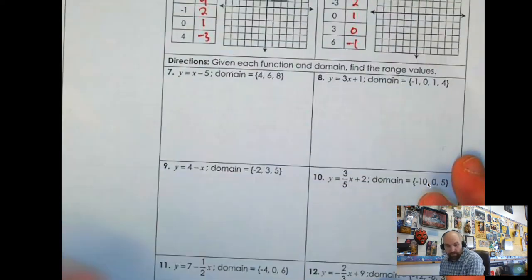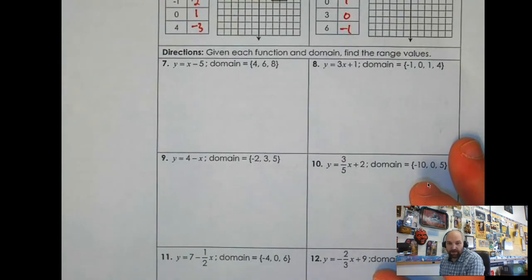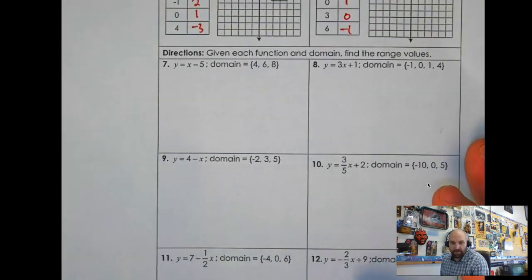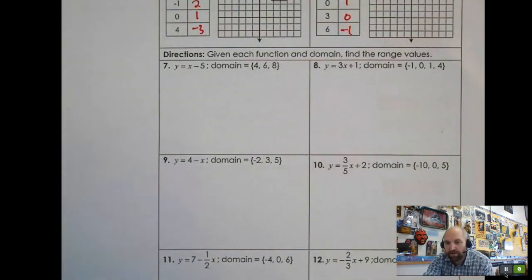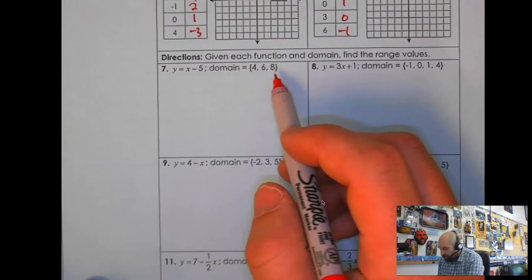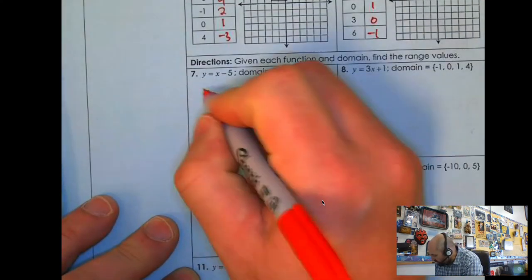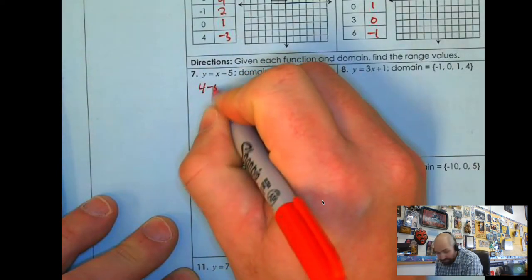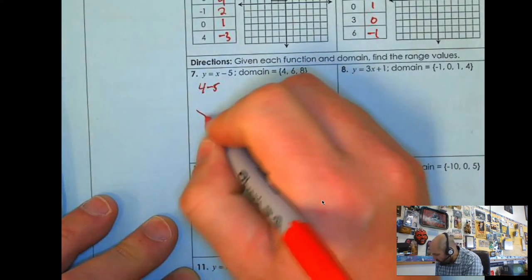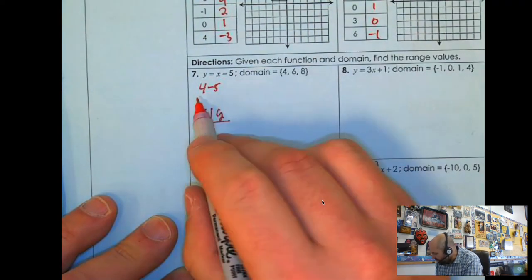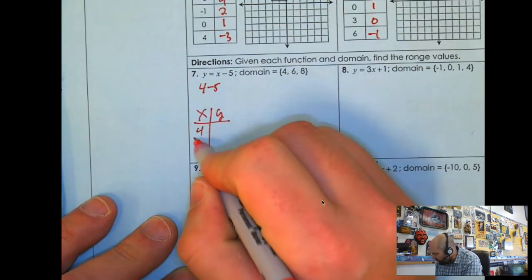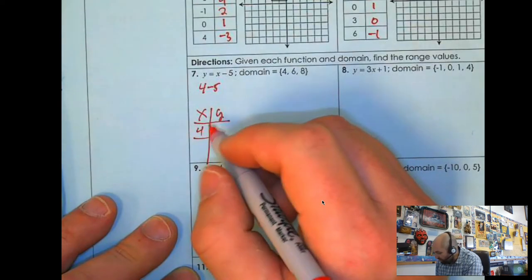Let's look at 7 through 14. So this is given each function and domain find range values. So basically, you see they got the domain, you basically just plug this in. So we're going to go 4 minus 5. So I'm going to do an x, y check. So when I plug in 4, I take away 5, I get negative 1.